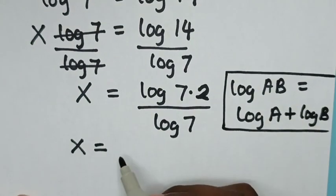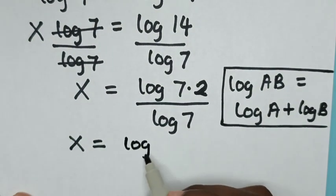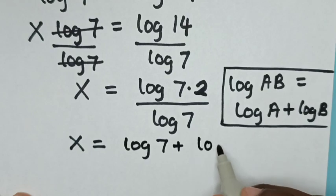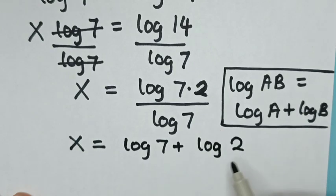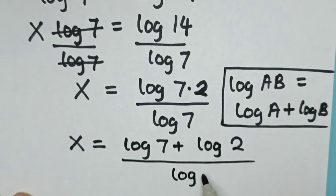So it will be log 7 plus log 2, over log 7.